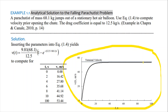The terminal velocity is defined as the maximum velocity a falling body can reach, because the drag coefficient or air resistance present in the Earth's atmosphere limits its speed. Therefore, an object can only reach its terminal velocity, and at time t approaching infinity, it will never exceed the terminal velocity. This example illustrates the analytical solution to the falling parachutist problem using calculus methods.